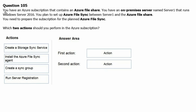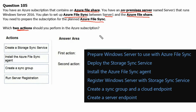Question 105. You have an Azure subscription that contains an Azure file share. You have an on-premise server named Server1 that runs Windows Server 2016. You plan to set up Azure file sync between Server1 and Azure Files. You need to prepare the subscription for the planned Azure file sync. Which two actions should you perform in the Azure subscription? As we have seen, the six action items are: 1 — Prepare Windows Server; 2 — Deploy the storage sync service; 3 — Install the Azure file sync agent; 4 — Register Windows Server with storage sync service; 5 — Create a sync group and a cloud endpoint; 6 — Create a server endpoint.